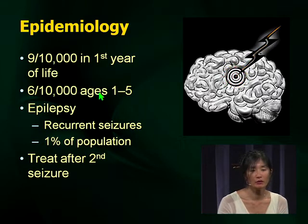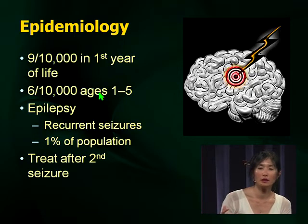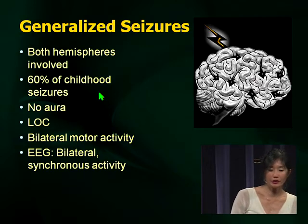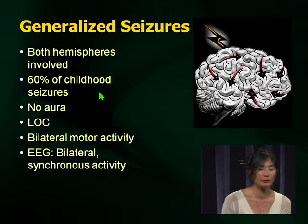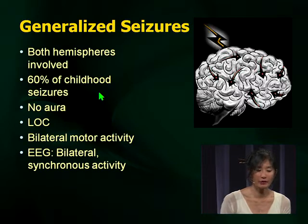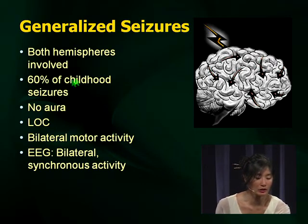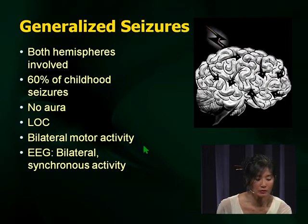Seizures occur very frequently in the pediatric population — in the first year of life, one in a thousand; ages one to five, six in a thousand. Epilepsy is defined as recurrent seizures and may occur in one percent of the population. We don't treat after the first seizure — we treat after the second, because the likelihood of recurrence is greater than 50 percent after a second seizure. Generalized seizures involve both hemispheres; idiopathic generalized epilepsy represents many developmentally normal kids. 60 percent of childhood seizures are generalized, with no aura, loss of consciousness, and bilateral motor activity.